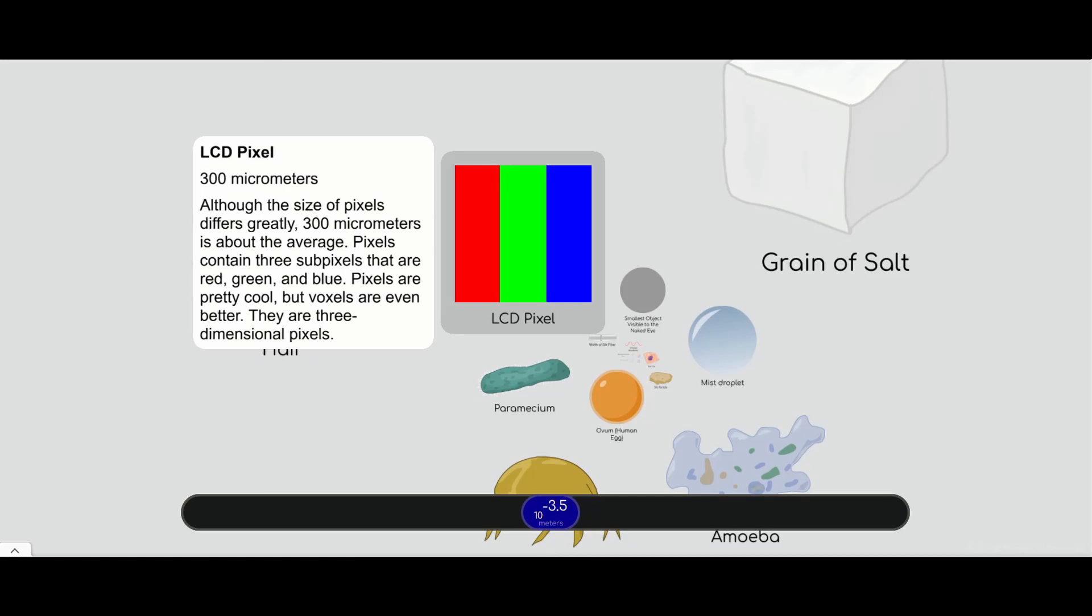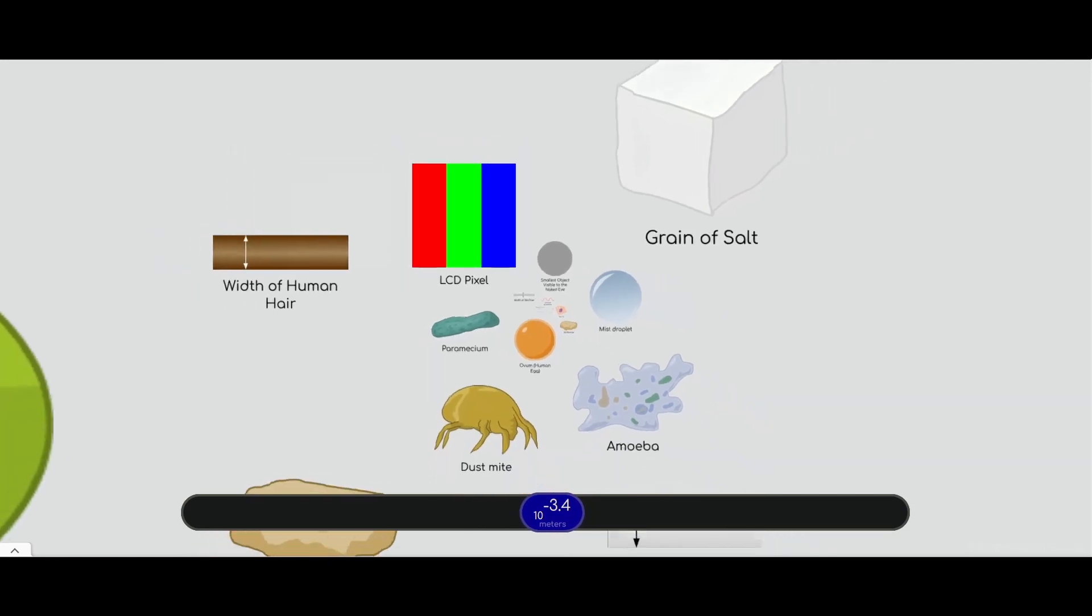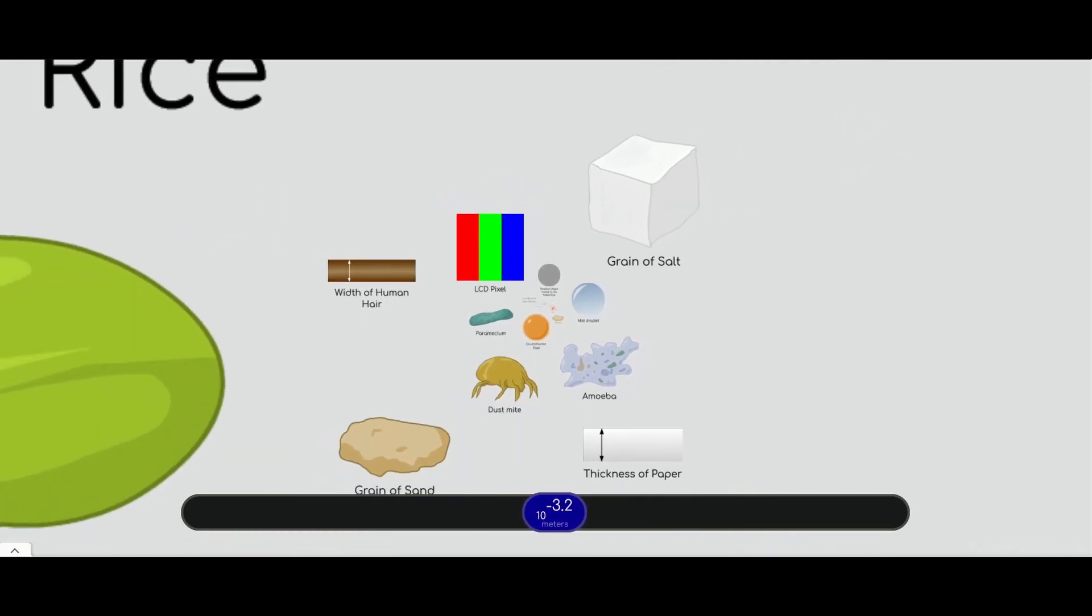This is what's in your TV screen, or the screen you're looking at now. Tons and tons of those things. The three primary colors: red, green, and blue.